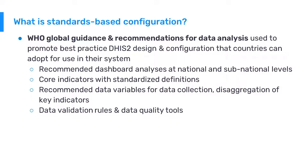As part of our collaboration, the global DHIS2 team models core indicators with standardized definitions as proposed by the WHO and included in strategic information guidelines. Packages also include recommended data variables for data collection and disaggregation of key indicators. These help countries to map what types of data elements are included in their paper forms and identify any gaps in those data collection tools. Data validation rules and data quality tools are used to promote data quality analysis and standards.